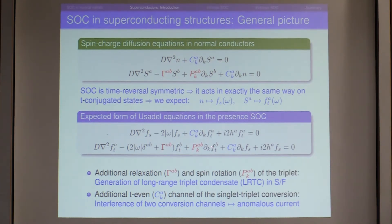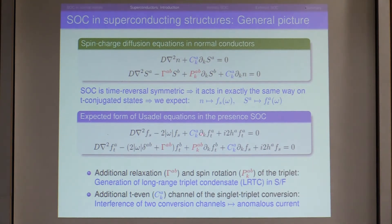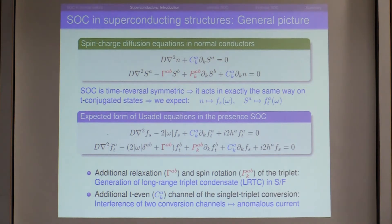Additionally, there is a spin-charge coupling term that is time-reversal invariant. While the Zeeman-induced singlet-triplet coupling carries a phase shift of pi/2, this spin-orbit-induced spin-charge coupling produces coupling with the same phase — introducing additional complex structure that can produce a new phase and thus an anomalous current.